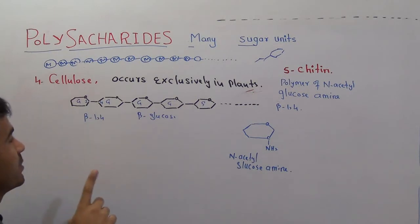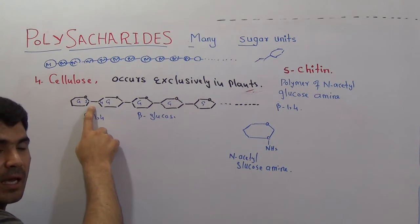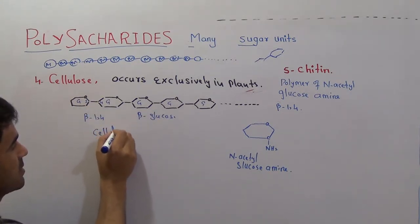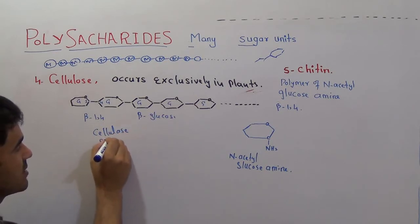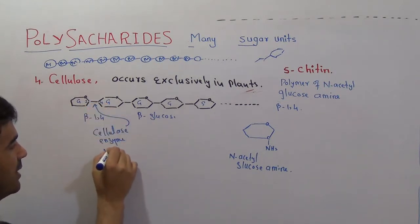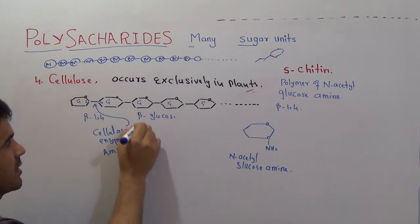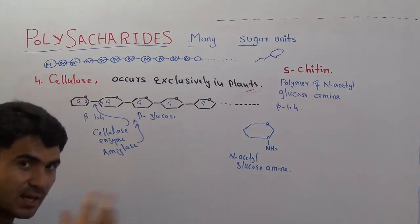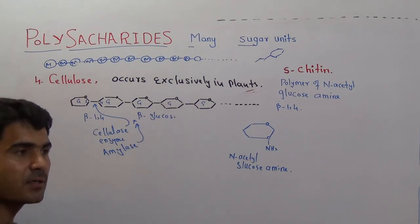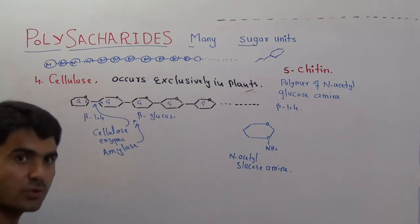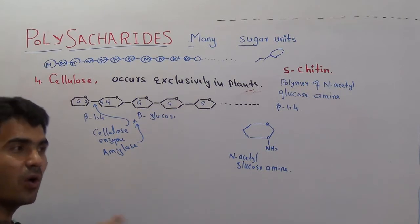This bond needs another enzyme called cellulase. The cellulase enzyme can break this bond, but amylase cannot break this bond. That is why when we take cellulose, we cannot digest it.